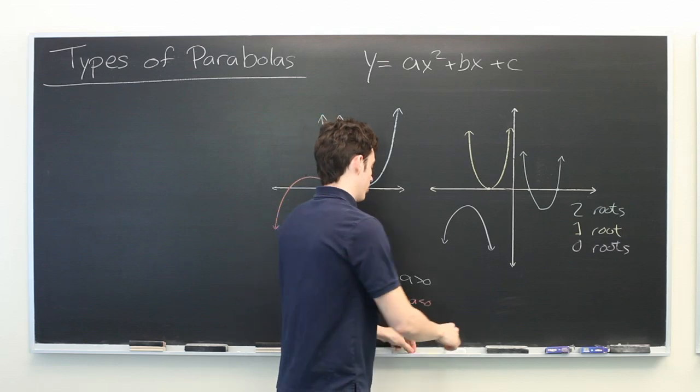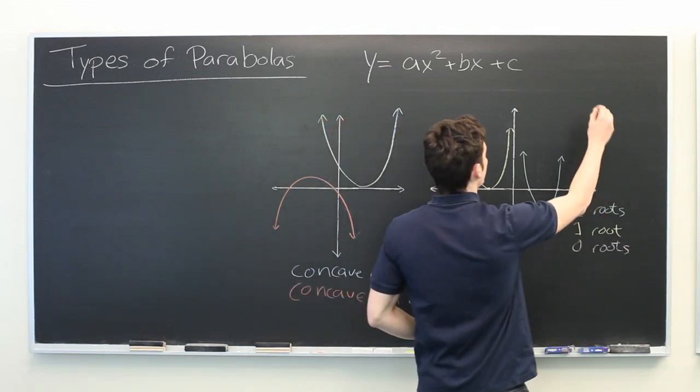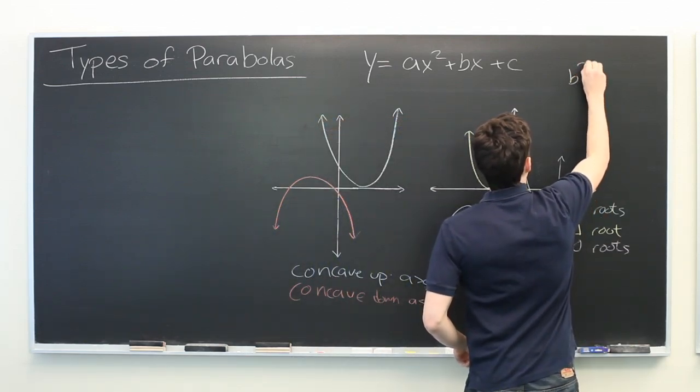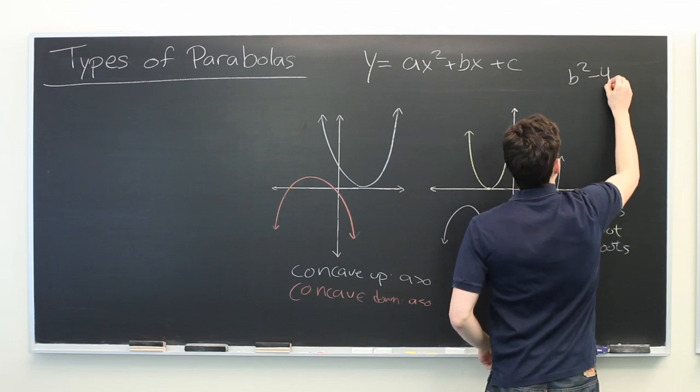This is determined by the following formula: b squared minus 4ac.